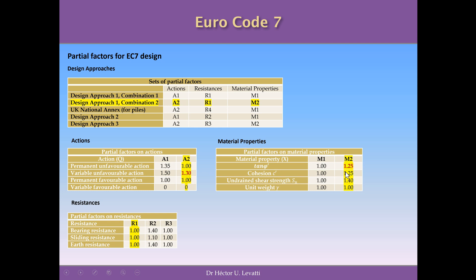For material properties, the M2 column proposes a coefficient of 1.25 for the tangent of the angle of internal friction and 1.25 for cohesion, representing a 25 percent reduction of these properties. It also establishes a 40 percent reduction of the undrained shear strength Su, and a coefficient of 1 for unit weight, so the unit weight does not change.